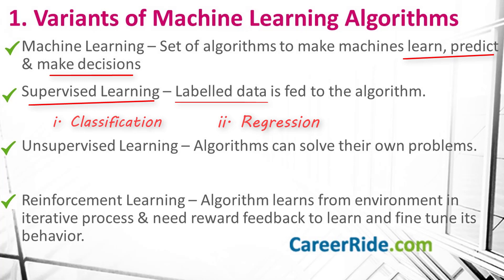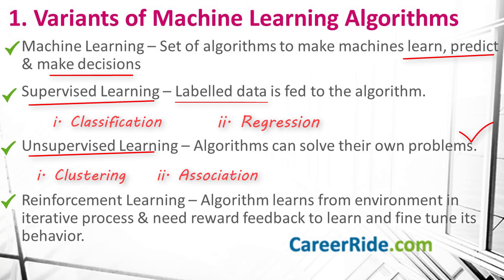Examples of supervised learning models include logistic regression, random forest, nearest neighbors, support vector machines, etc. The second variant is unsupervised learning algorithms. Here, inputs are fed to the algorithm without telling it the expected output. These algorithms are capable of solving their own problems — the algorithm observes patterns and structures in the given data and makes its own decisions. They are useful when data is not tagged, labeled, or divided into categories. Unsupervised learning problems can be categorized into clustering and association. Some examples include K-means, GMM, and PCA.